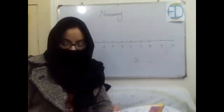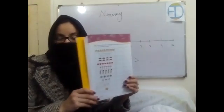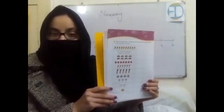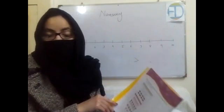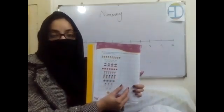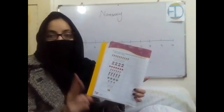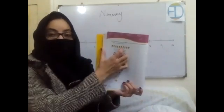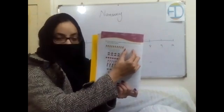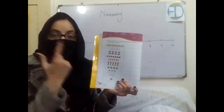Now open your workbook to page number four. The question says: count each set of objects and write the numbers and number names. In the first column write the numbers in the form of digits, and in the second column write them in the form of words. Count the objects, then fill in both columns.